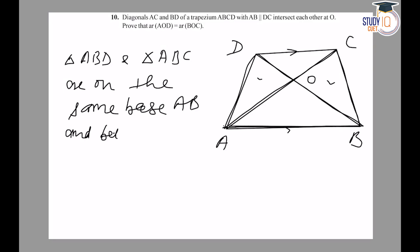Between the parallel lines AB and DC. Therefore, area of triangle ABD equals area of triangle ABC.